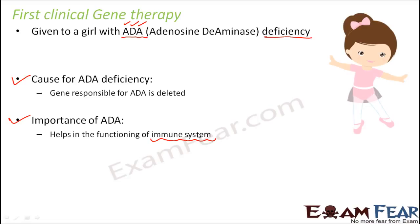If you look at the deadly disease AIDS, what happens is the immune system itself is attacked. Over time, the immune system becomes so weak that the body becomes extremely prone to any kind of infection, and that infection becomes fatal and the person dies. So if there is ADA deficiency, the immune system becomes weak and the person will eventually die.